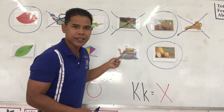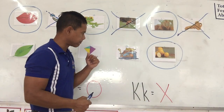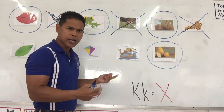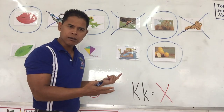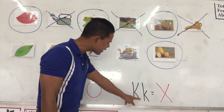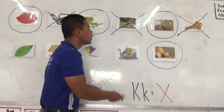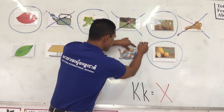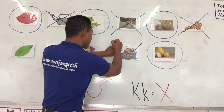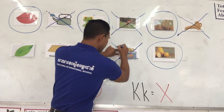Next one is king. Yes, king. King starts with the letter K. So we put an X on it. Yes, cross it out.